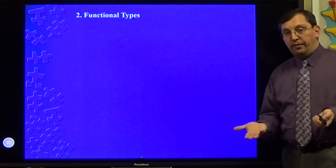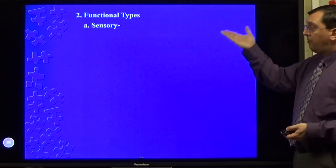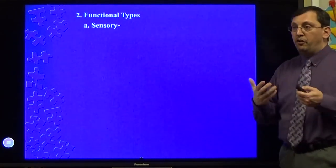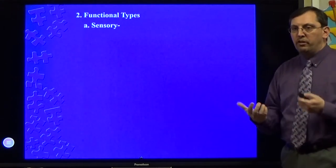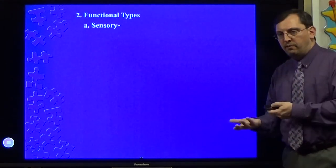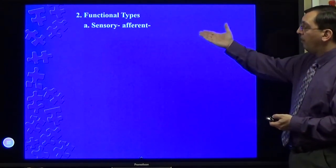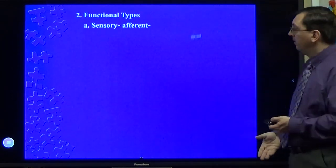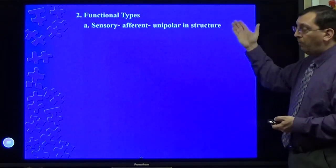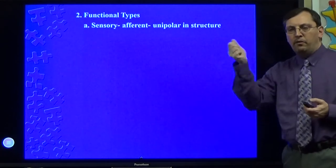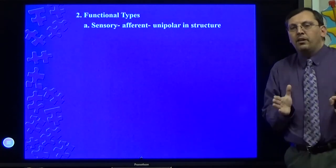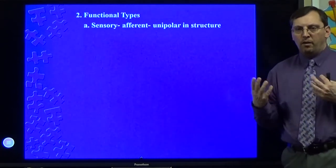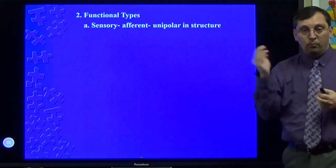The functional type, based on what they do—you have sensory neurons because their job is to detect information of their environment and pass it forward. So they are also called afferent. They are typically unipolar in structure. Makes sense. I want to just grab that information and send it straight forward. I don't really care about processing it or worrying about multiple signals. I just want to get the information and move forward.